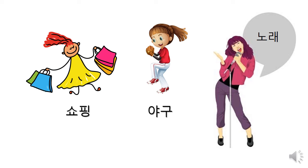And if you wanna say it in 반말, the casual form, it's fairly easy. You just drop 요 from the end of each sentence. 쇼핑하고 싶어 — I wanna go shopping. 야구하고 싶어 — I wanna go play baseball. 노래하고 싶어 — I wanna go sing a song.